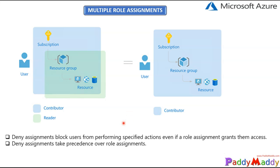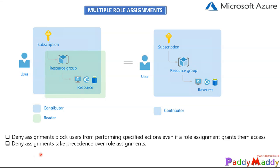Now let's talk about the DENY assignment. You can block actions by creating a DENY assignment — some actions can be blocked when you explicitly assign DENY to users. DENY assignments take precedence over role assignments. So when you assign a DENY, that is going to take precedence.